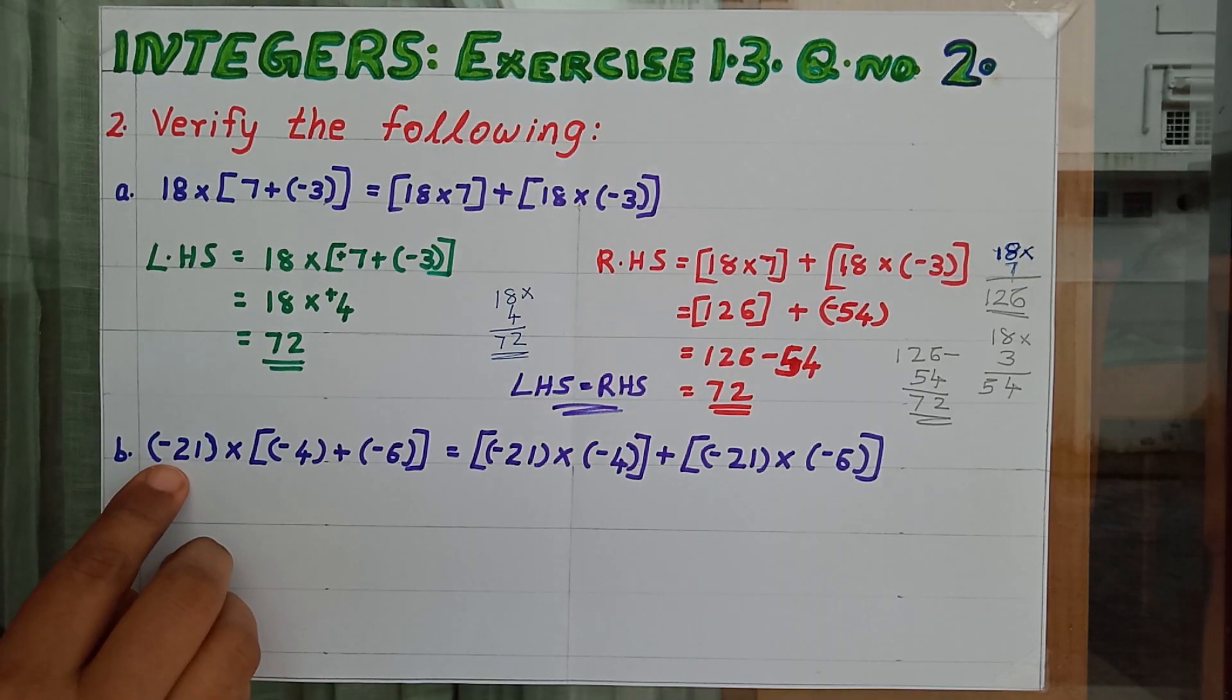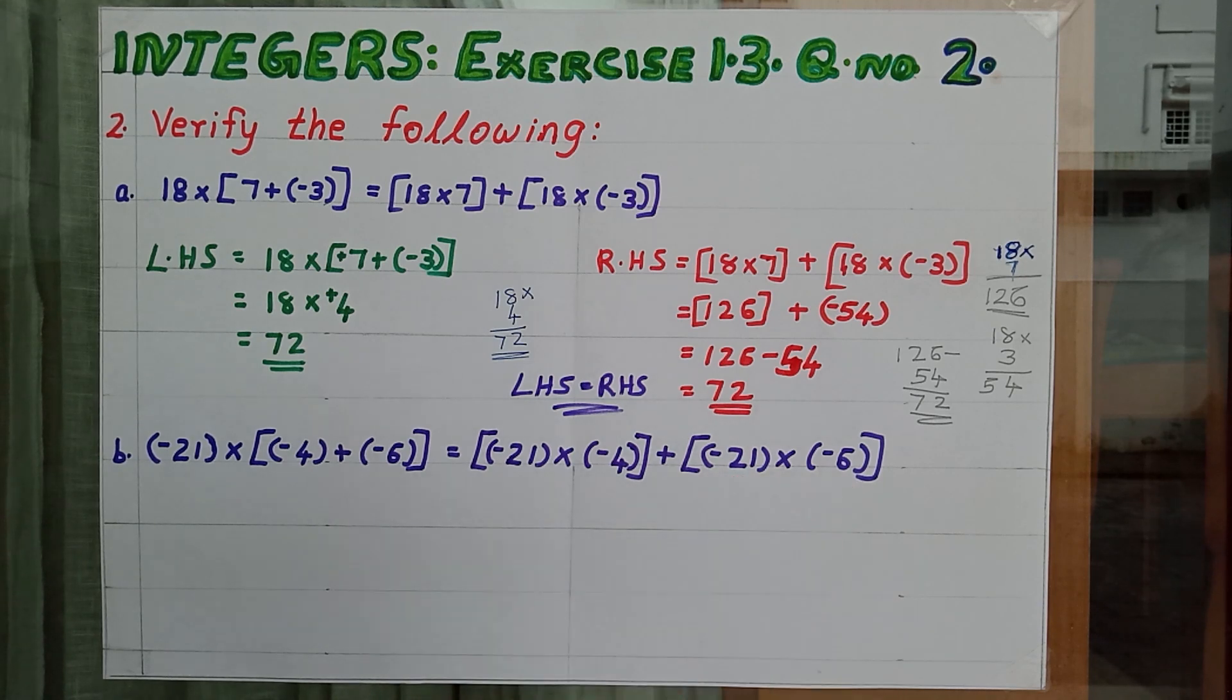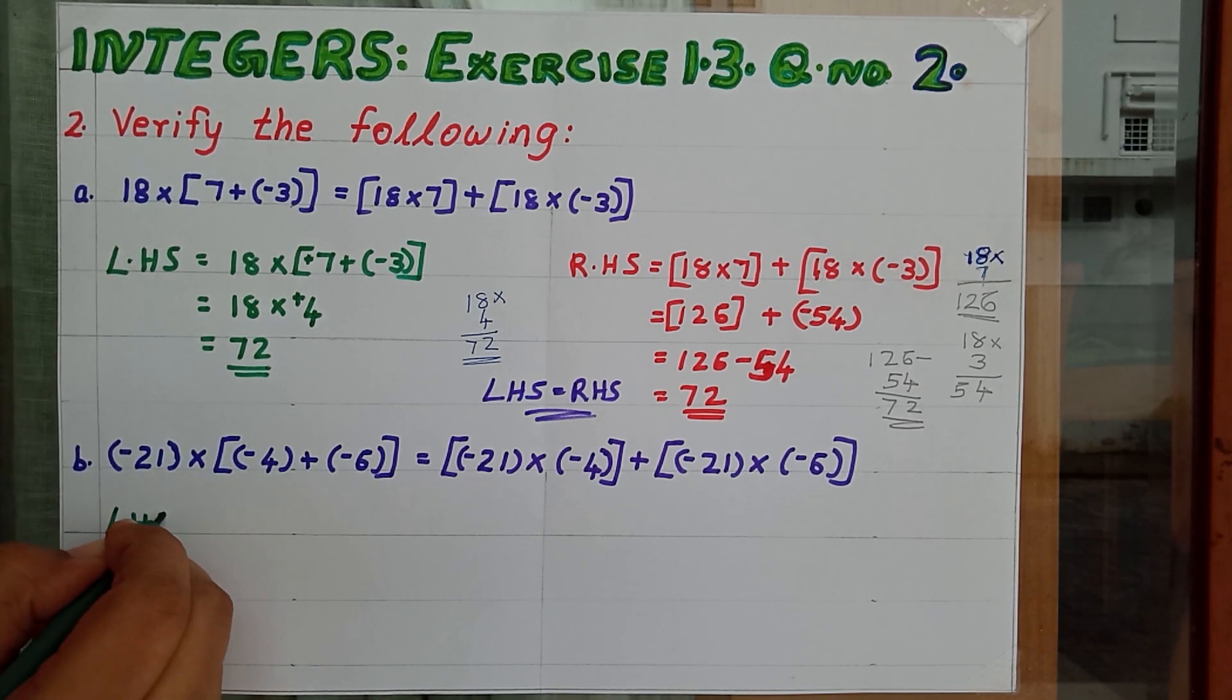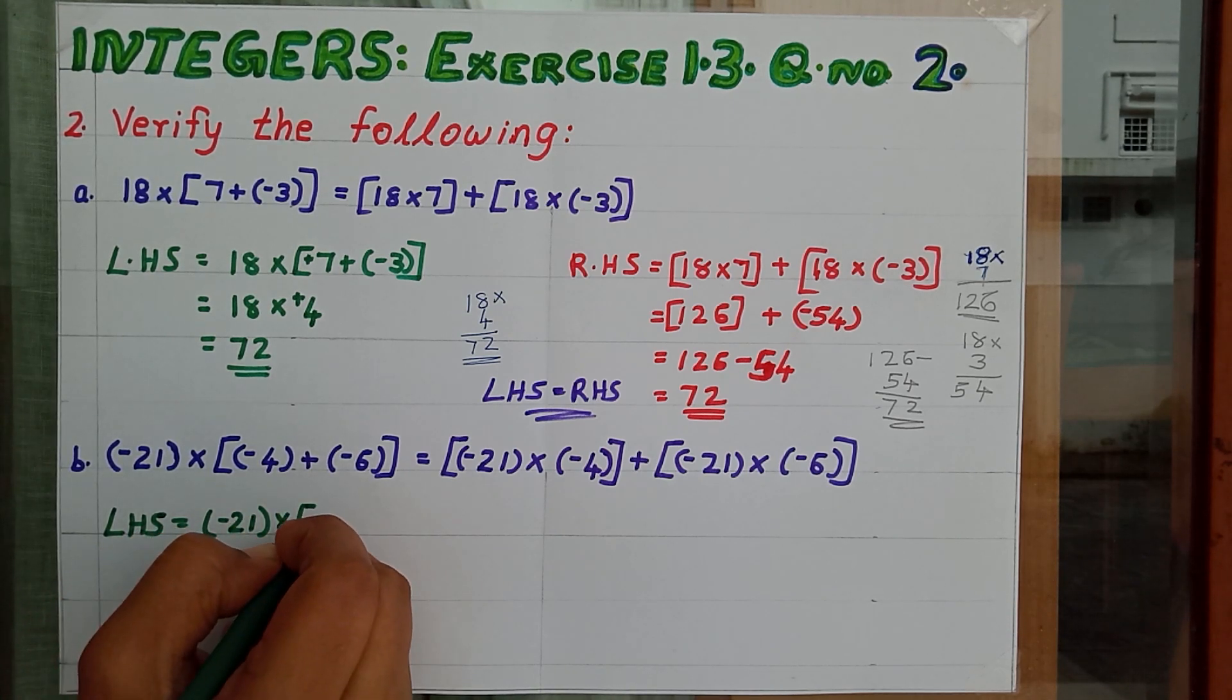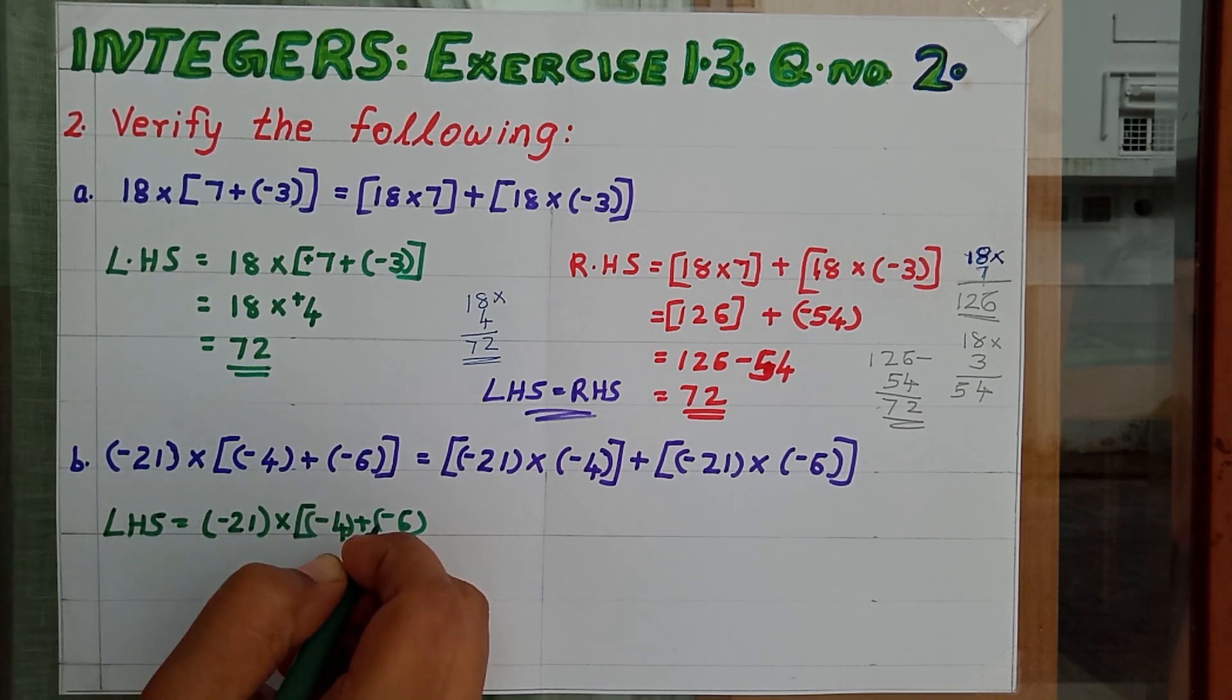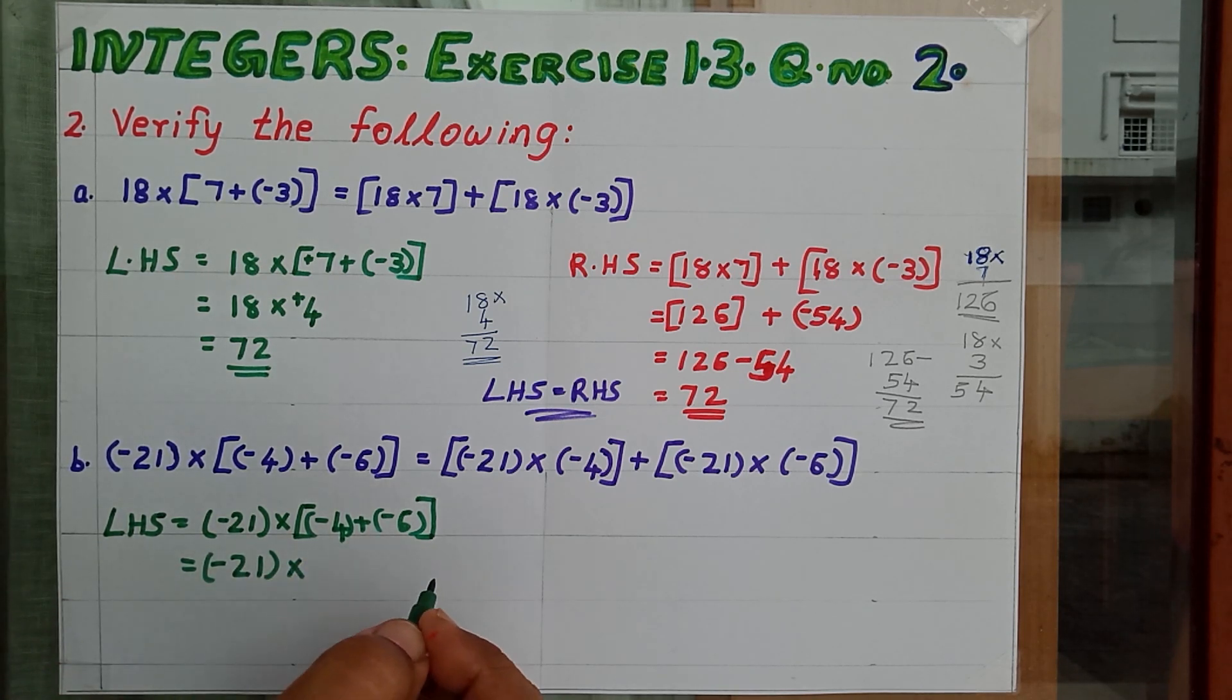Next one is minus 21 into minus 4 plus minus 6. Equal to minus 21 into minus 4 plus minus 21 into minus 6. So for this LHS equal to minus 21 into minus 4 plus minus 6.